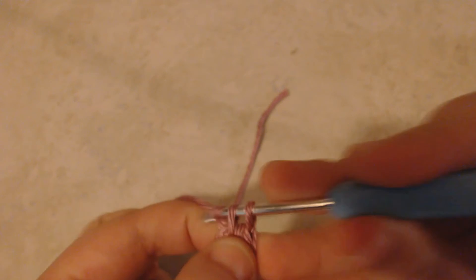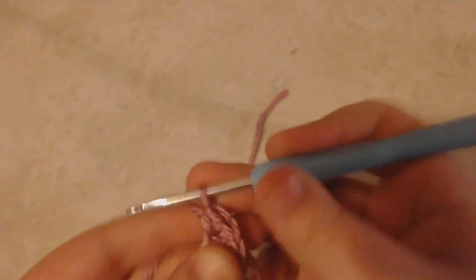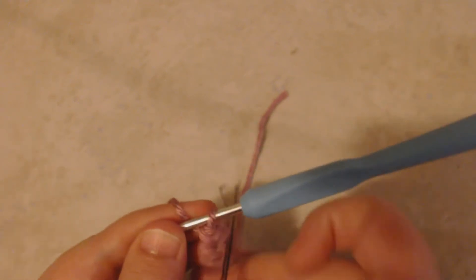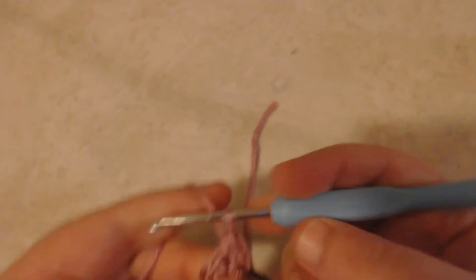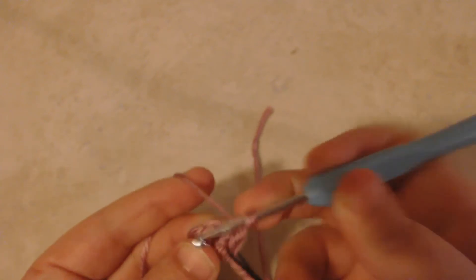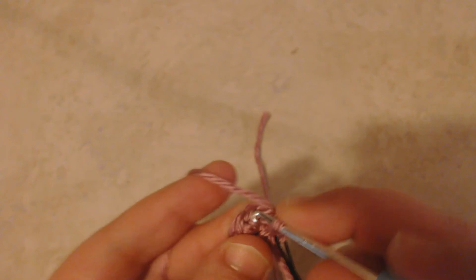Then in the same stitch I'm going to single crochet again to increase. And I'm going to continue to increase every stitch until the end of the row. So I'm going to single crochet two times into each stitch.